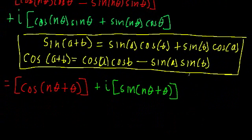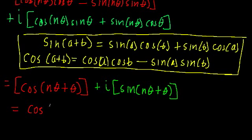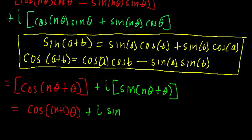Now we can simplify a little bit more by factoring out theta, so we get that this equals cosine of n plus 1 times theta plus i times sine of n plus 1 times theta.